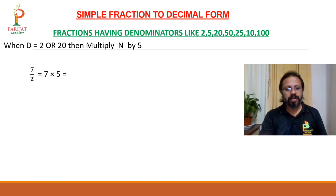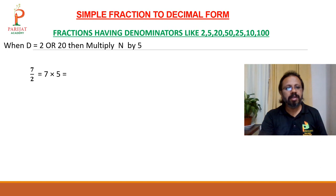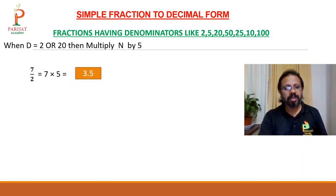For example, 7 upon 2. Here numerator is 7 and denominator is 2. You multiply the numerator by 5 to get 35. Since the denominator is single digit, leave the last digit and give the decimal point. So the answer will be 3.5.